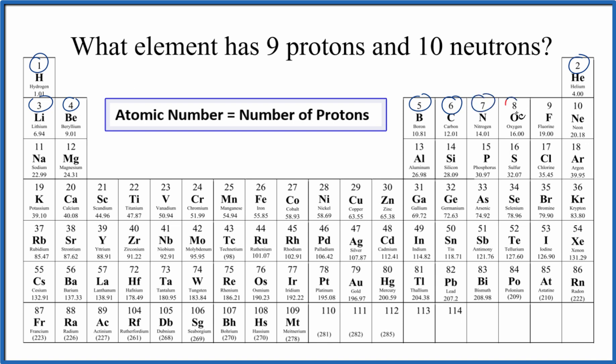Seven protons, eight protons, and right here, nine protons. If we have nine protons, atomic number nine, that's fluorine.